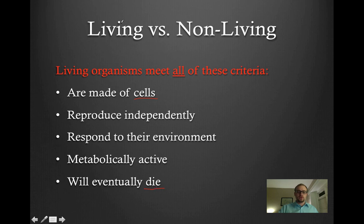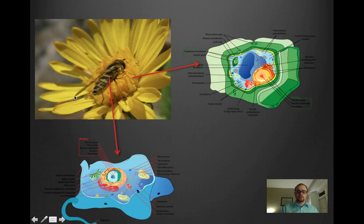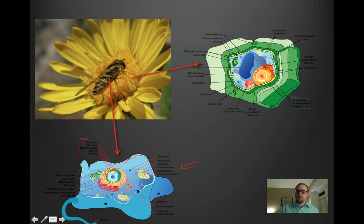The first criteria is that all living organisms are made of cells. In this example we have an animal — this insect — and a plant — this flower. Both animals and plants are made of cells. Here we have an animal cell, which is essentially a membrane-bound sac with a cell membrane. In the plant cell we also have the cell membrane, plus an additional structure called the cell wall, which adds rigidity and extra structural support to the cell.